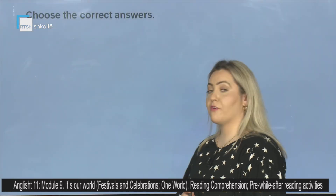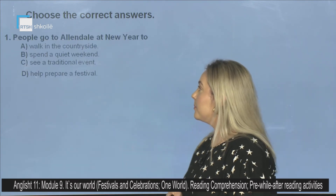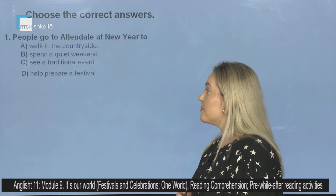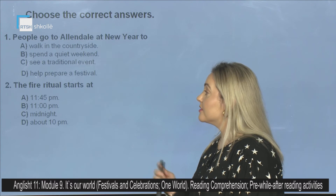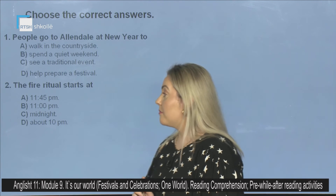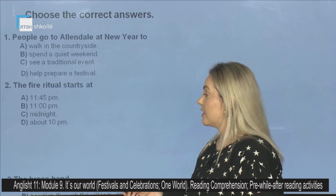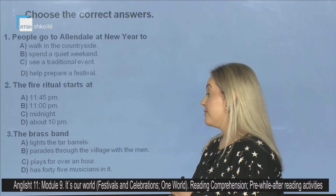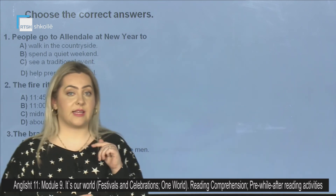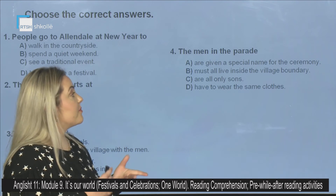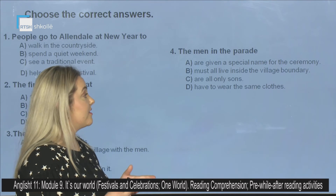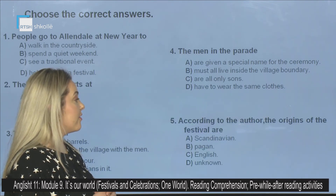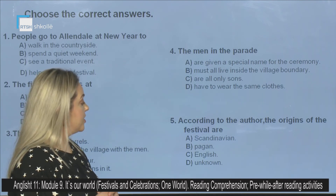You should choose the correct answers about the reading and the celebration. Question 1: People go to Allendale at New Year to — A. walk in the countryside, B. spend a quiet weekend, C. see a traditional event, D. help prepare a festival. Question 2: The fire festival will start at — A. 11:45 p.m., B. 11 p.m., C. midnight, D. about 10 p.m. Question 3: The brass band — A. lights the tar barrels, B. parades through the village with the men, C. plays for over an hour, D. has 45 musicians in it. Question 4: The men in the parade — A. are given a special name for the ceremony, B. must all live inside the village boundaries, C. are all only sons, D. have to wear the same clothes. Question 5: According to the author, the origins of the festival are — A. Scandinavian, B. pagan, C. English, D. unknown.